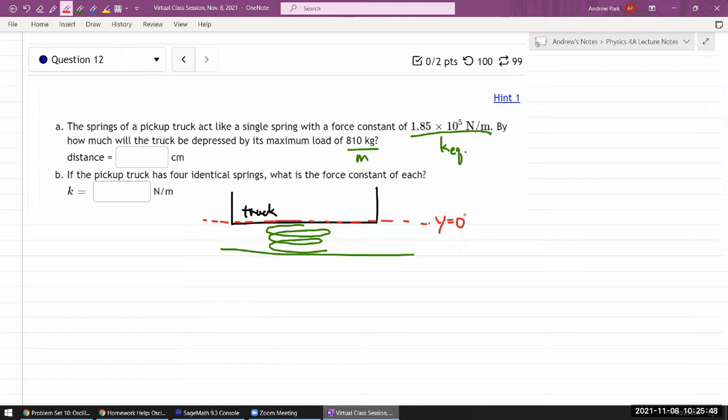And now imagine we place some additional mass here. This is the mass M referred to in the question. Then because of the weight of this mass, the truck will get depressed a little bit. And what the question is asking is what is that change in height, that additional depression due to the mass? With that in mind, I think then for the question, it's just a simple application of Hooke's Law.